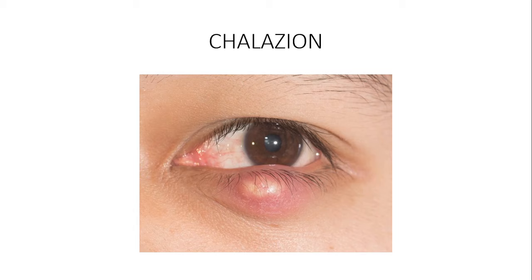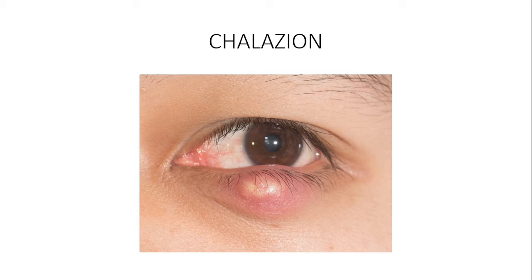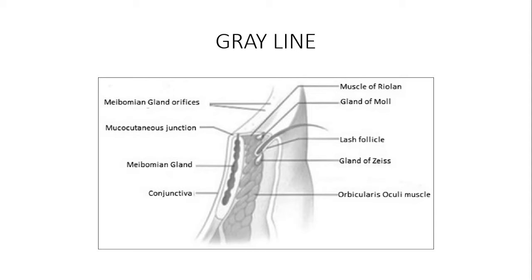When there is a problem with eyelid hygiene, that is one major cause — debris accumulation blocks the meibomian gland orifices. Any eyelid margin disease, such as scarring of the eyelid margin, can also block the meibomian gland orifice. This leads to blockage of lipid discharge, which causes granuloma formation — what we call chalazion.